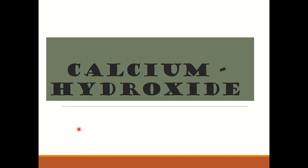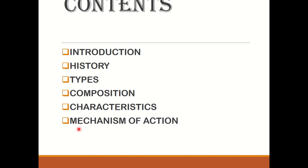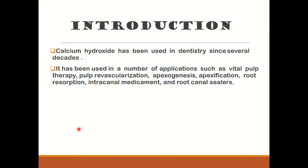Hello everyone. Today we will talk about calcium hydroxide and its use in dentistry. We will discuss briefly about calcium hydroxide — its history, types, composition, characteristics, and the mechanism of action. Calcium hydroxide has been extensively used in dentistry since several decades and has now become mainstream. It has a number of applications such as vital pulp therapy, revascularization, as an intracanal medicament, and in root canal sealers.